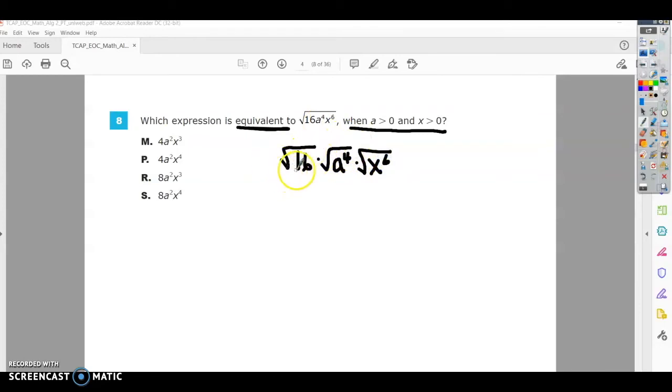So, square root of 16 is just 4. And then we know that the index is 2, and when this is a variable to a power, we can just take the index and divide it into that power. So, 2 goes into 4 two times. So, I'm going to have a squared.